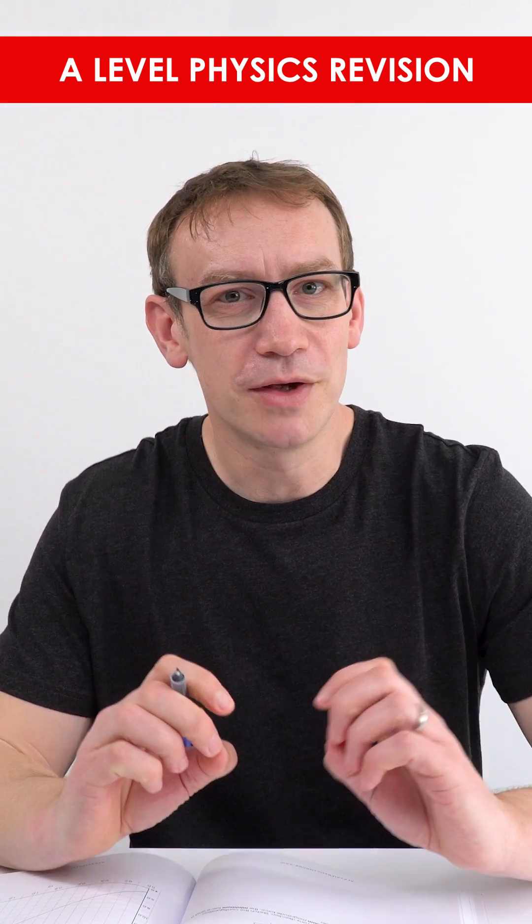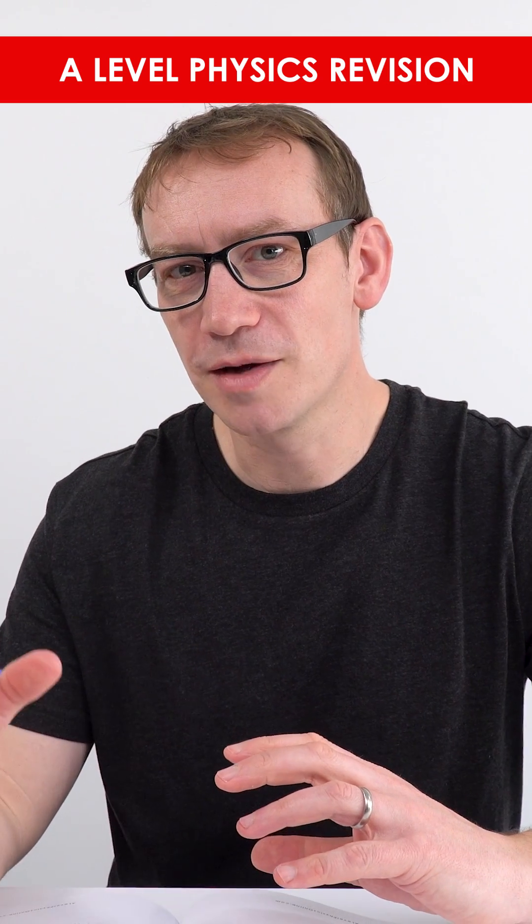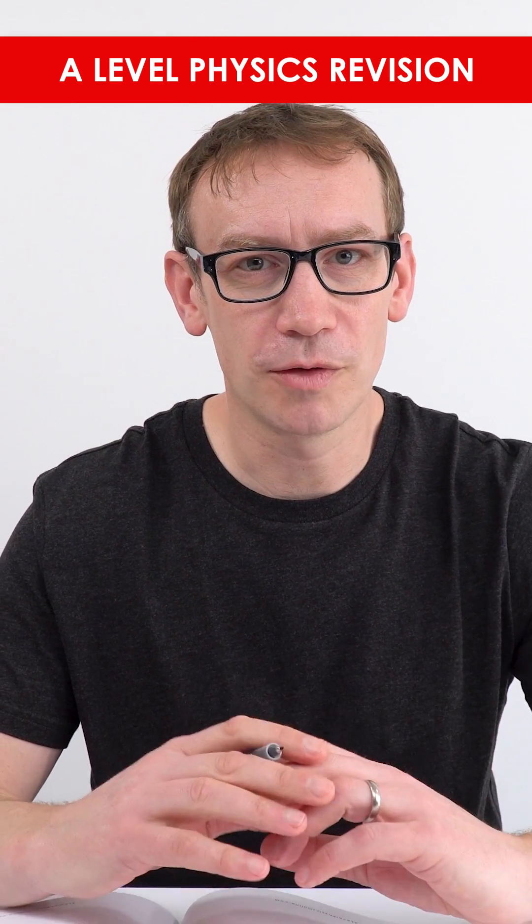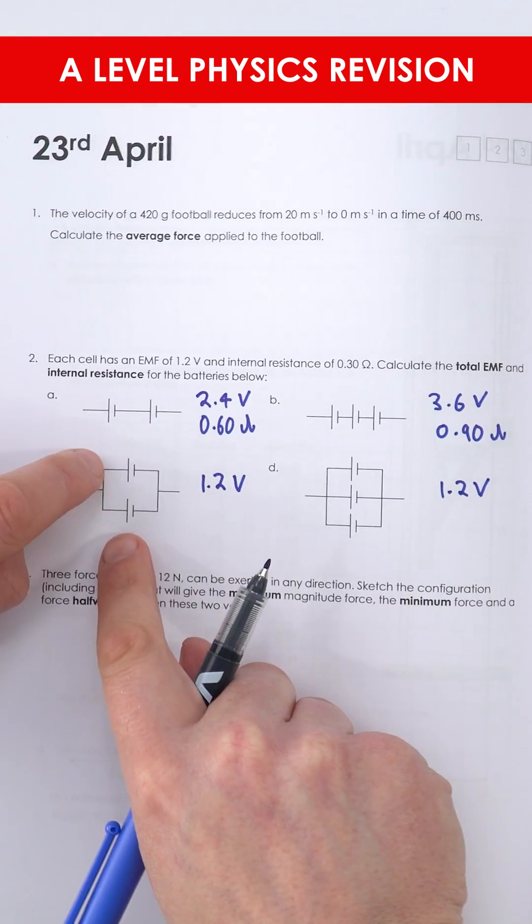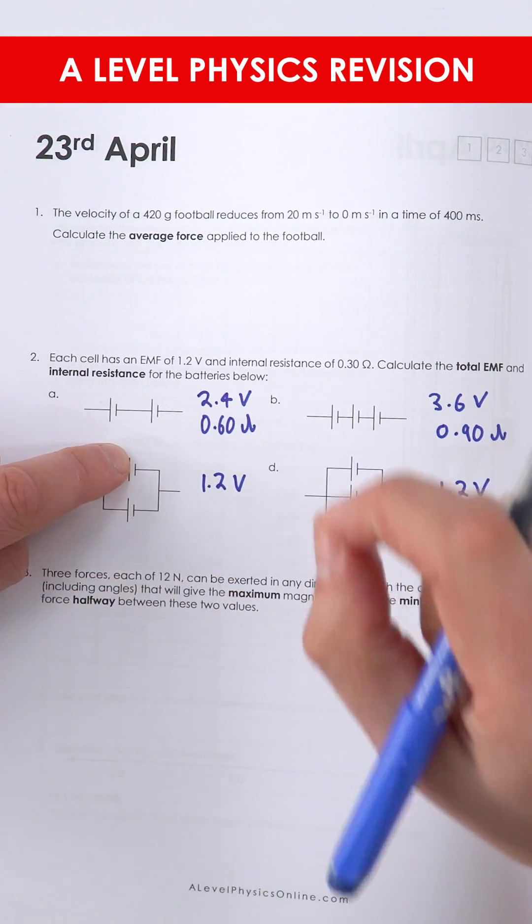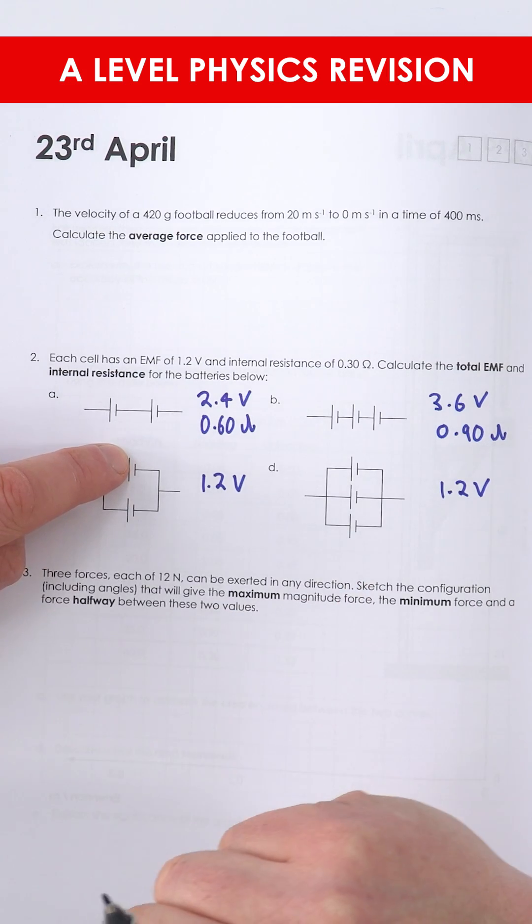However, because they are in parallel, just like when we add up resistors in parallel, we do 1 over RT equals 1 over R1 plus 1 over R2. Effectively we've got two parallel resistors, and that means that overall combined resistance decreases by a factor of 2.